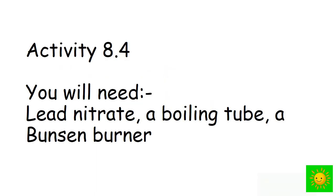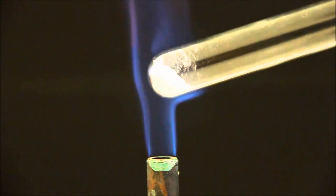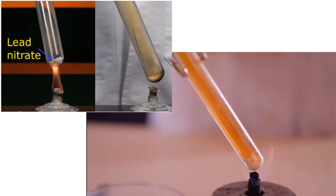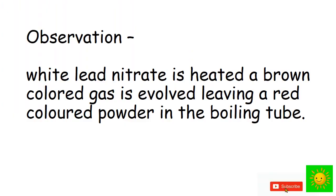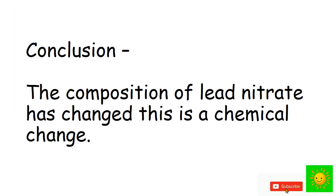We need lead nitrate, a boiling tube, and a Bunsen burner. Take 1 gram of lead nitrate to the boiling tube. Heat the boiling tube using the Bunsen burner. Record your observation. When white lead nitrate is heated, a brown colored gas is evolved, leaving a red colored powder in the boiling tube. The composition of lead nitrate has changed. This is a chemical change.